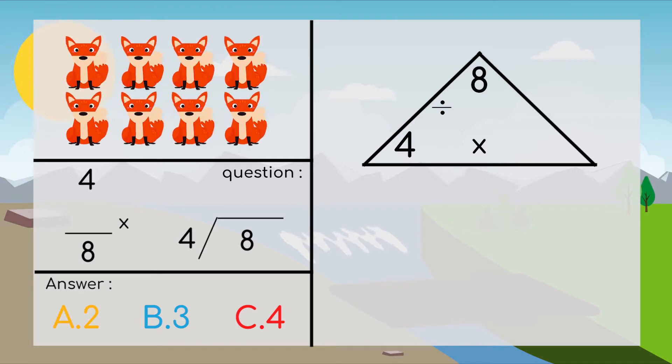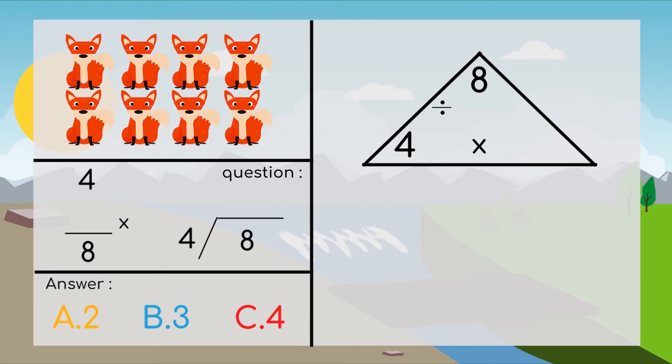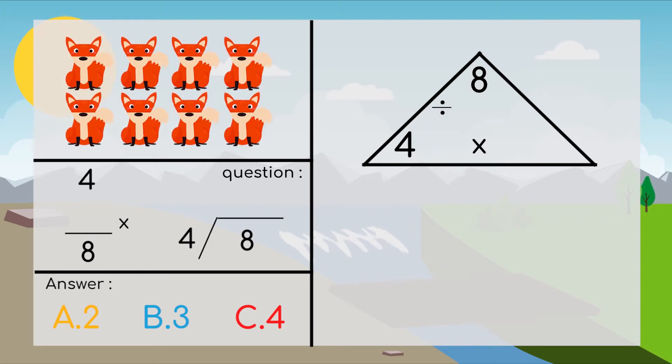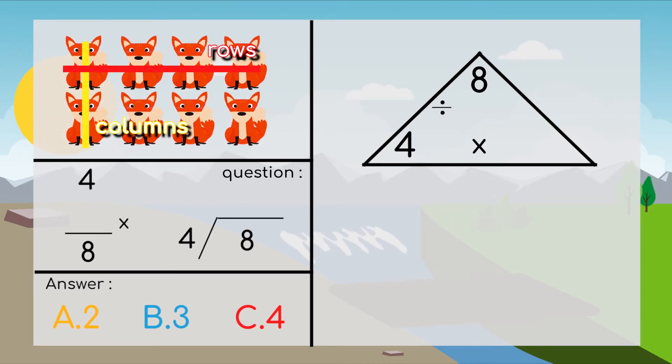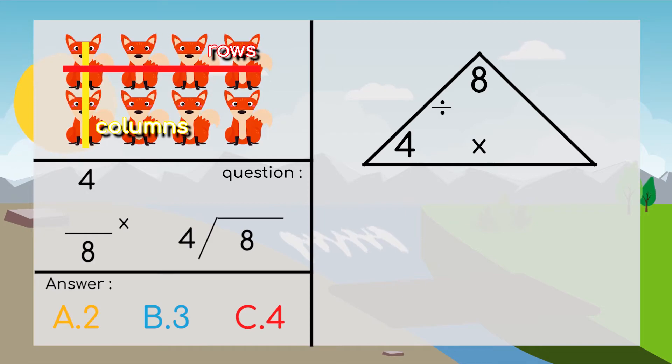To find the missing number, we are going to use division and multiplication and also counting. First let's see our picture here. As we can see, the total of our problem is 8. We got number 4 here, and I think it's related with a column or row in our picture. Let's figure that out.